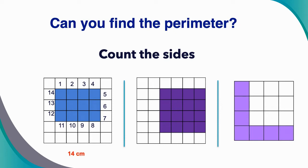Let's look at our shape in the middle. What is the perimeter? Remember, when we're given square grids, we count the sides — each side is one centimeter. Count with me: one, two, three, four, five, six, seven, eight, nine, ten, eleven, twelve, thirteen, fourteen, fifteen — so that's 16 centimeters. That's the perimeter.